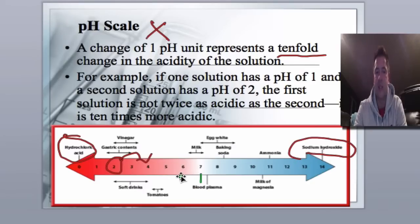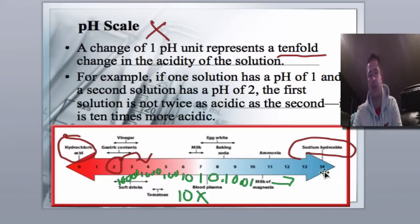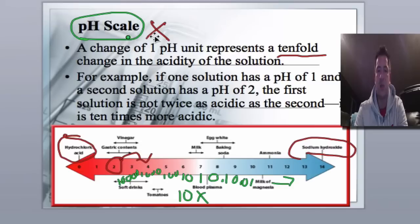Then we'd have 100, then we would have 1,000, then we would have 10,000 because each one of these is 10 times more acidic. But if we go the other direction we'd have 0.1, 0.01, and so on down to the base.